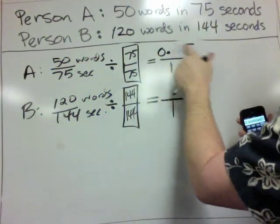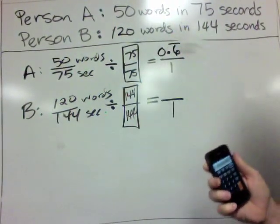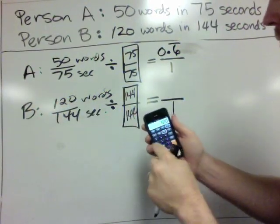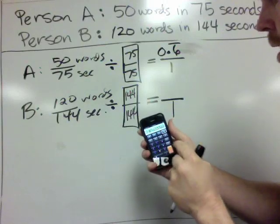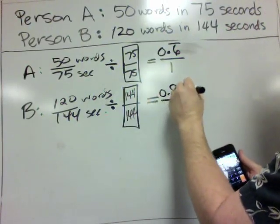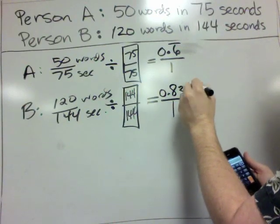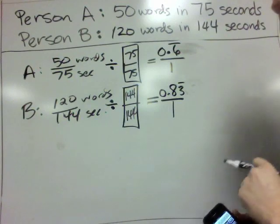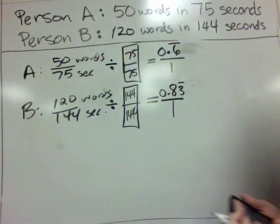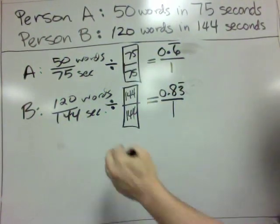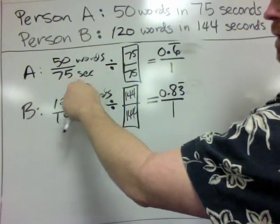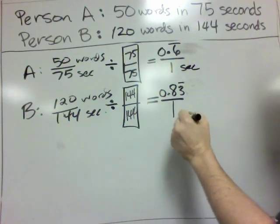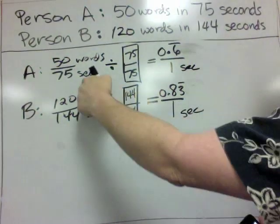And then I'm going to do the same thing down here. I'm going to take 120 and I'm going to divide by 144, and I get 0.833333333. And the 3s keep going forever, so I'll just erase that and put a bar on top of the 3. So now we've got these two ratios. Now how does this help us decide who's faster? Well, if you think about the labels, this 1 stands for 1 second, and this 1 stands for 1 second because the labels come across.